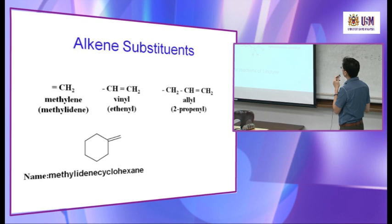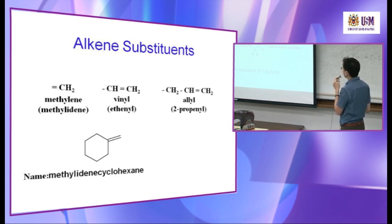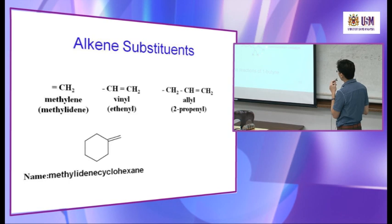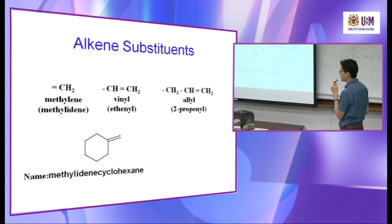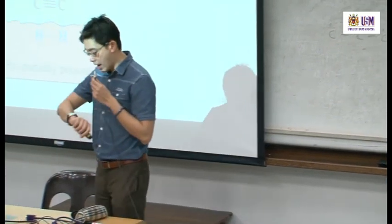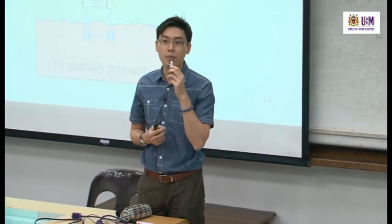Examples of reagents for alkyne addition: HX adds one or two H and X; halogenation adds X2 (4X total if two equivalents); hydration uses H2O in the presence of H2SO4 and mercury sulfate. These reactions also include hydroboration and oxidation — the same processes you have already learned for alkenes. We'll stop here and continue tomorrow.